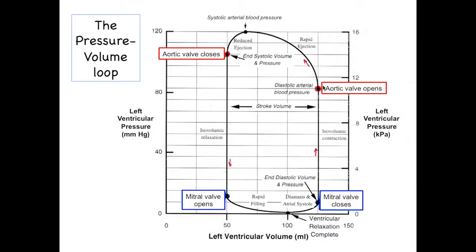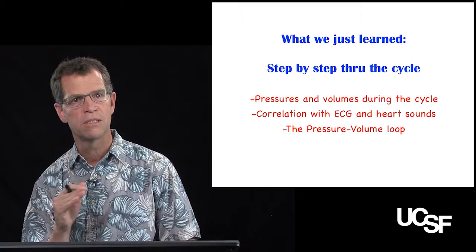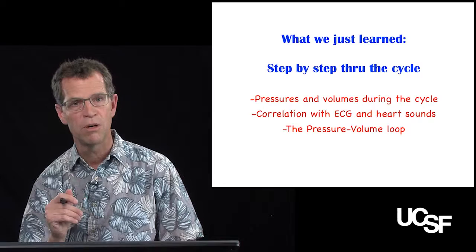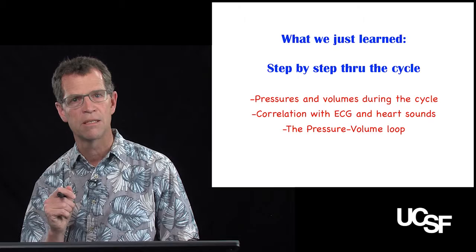The pressure-volume loop also reveals clinically important blood pressure values: the pressure at which the aortic valve opens corresponds to diastolic arterial blood pressure, and the peak pressure equals systolic arterial blood pressure. In this example, the loop shows a roughly normal blood pressure of about 120 over 80 mmHg. With that, we've gone through the basic steps of the cardiac cycle, correlated pressures and volumes with the ECG and heart sounds, and introduced the pressure-volume loop as a tool for examining different cardiac conditions in subsequent lectures.